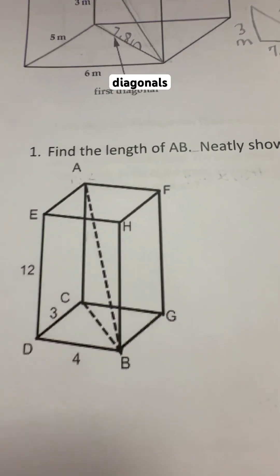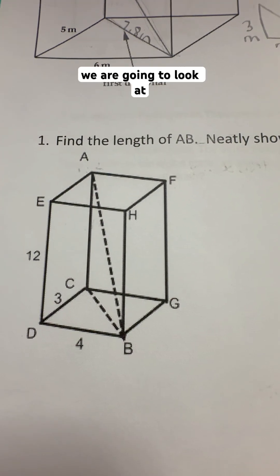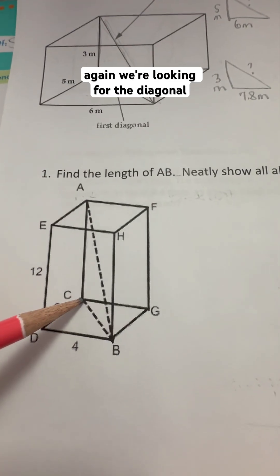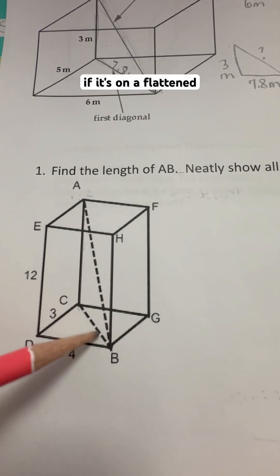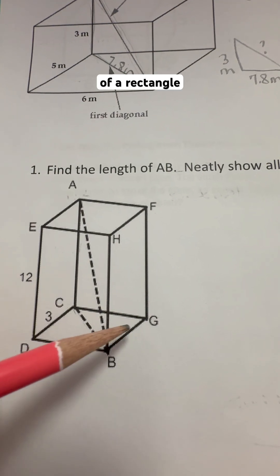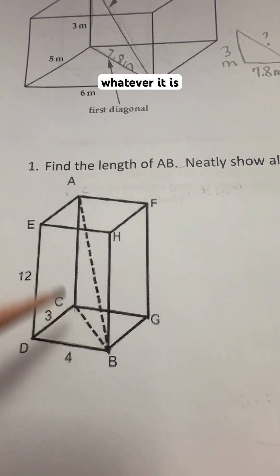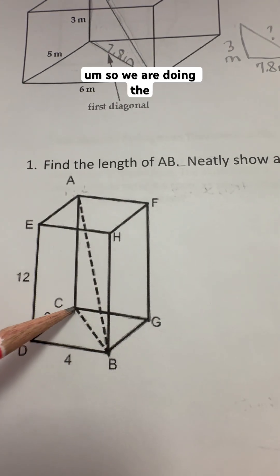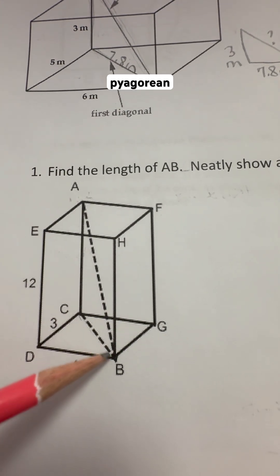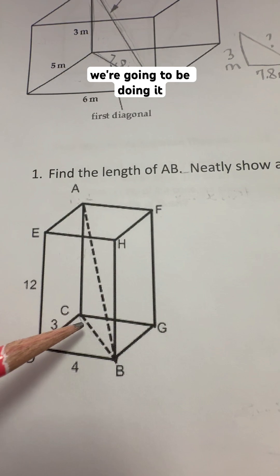We're back here doing some more of these space diagonals. We are going to look at space diagonals again — we're looking for the diagonal on a flattened piece of a rectangle or a square. So we are doing the Pythagorean theorem, and we're going to be doing it twice.